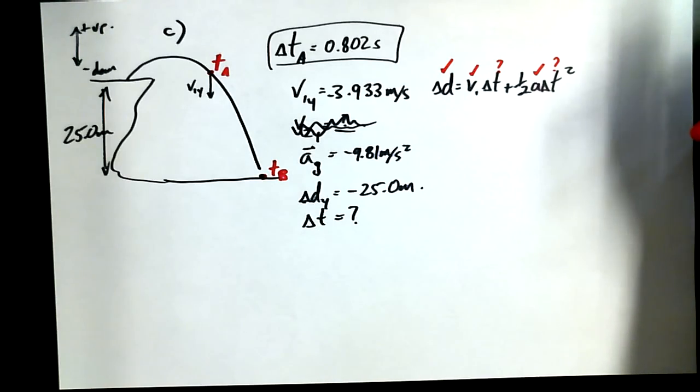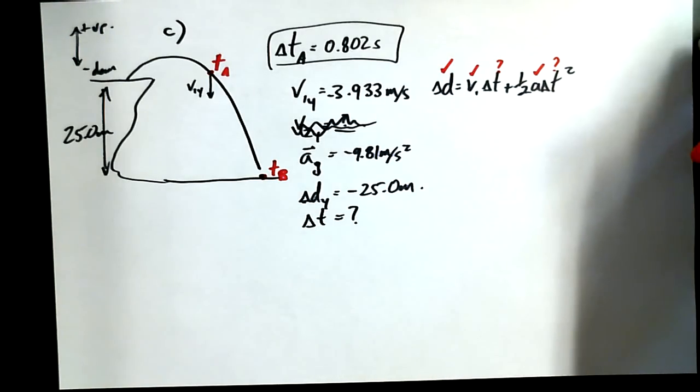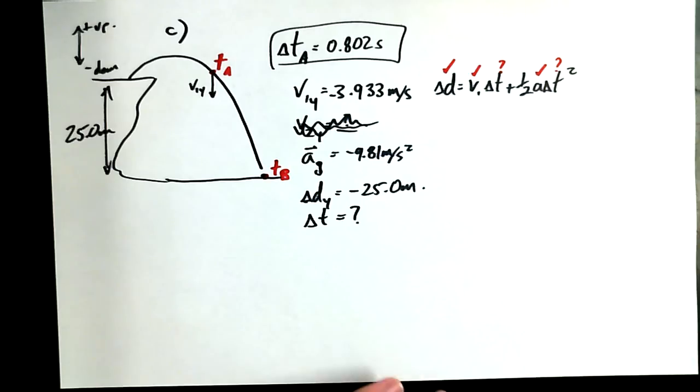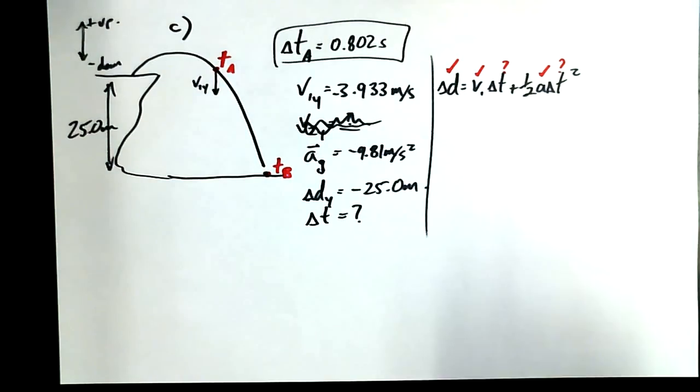And again, any time you know three pieces of information for a Y motion, you can figure out a fourth. So is there an equation that you'd be knowing that would help us to get delta T if you know V1Y, AY, and delta DY? I can tell you one. Delta D equals V1 delta T plus 1 half A delta T squared. Can you see that I want to know T? I know A. I know V1, and I know delta D. Can you see that I could solve for T? What type of equation is this? It starts with a Q. Quadratic. It is a quadratic. If I bring that delta D over to the right-hand side of that equal sign, I'll have zero equals a quadratic, and I can use the quadratic formula to do it.